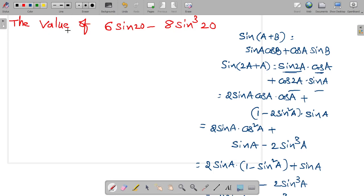This is a very easy problem. The value of 6 sine 20 minus 8 sine cube 20. First, 6 sine 20 minus 8 sine cube 20.